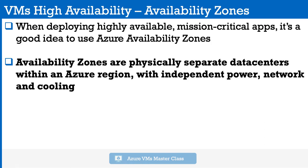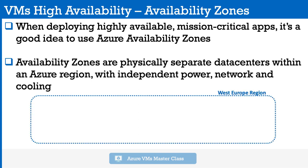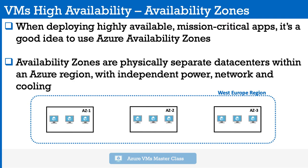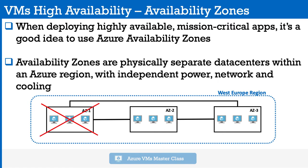Availability zones are physically separate data centers within an Azure region with independent power, network, and cooling. For example, in the West Europe region, we have three availability zones — AZ1, AZ2, and AZ3 — interconnected through high-speed, low-latency links. If AZ1 goes down, AZ2 and AZ3 will still be able to serve the content and keep critical applications online.